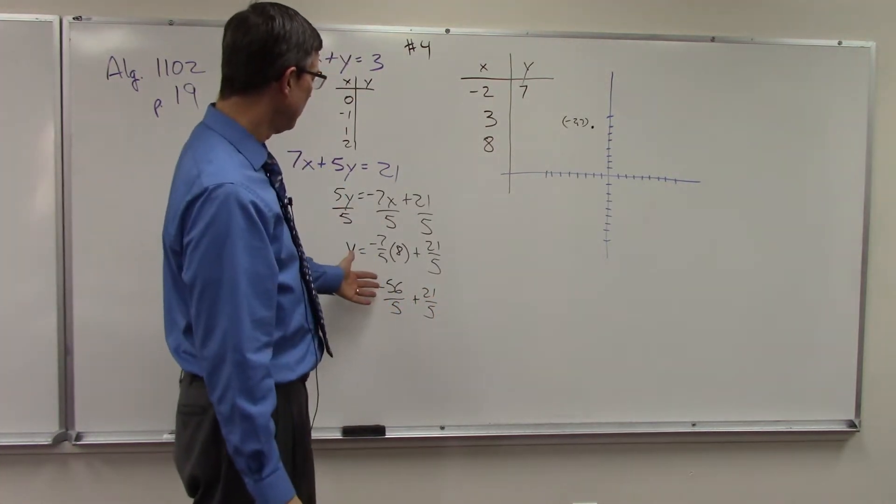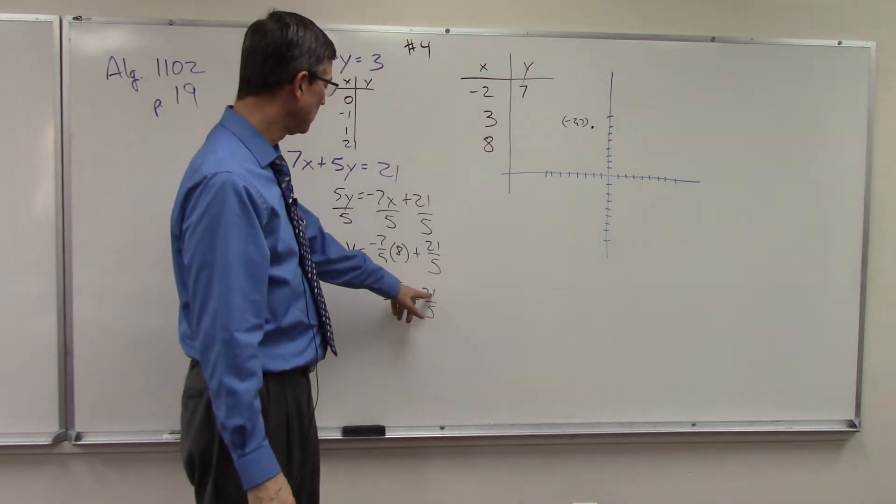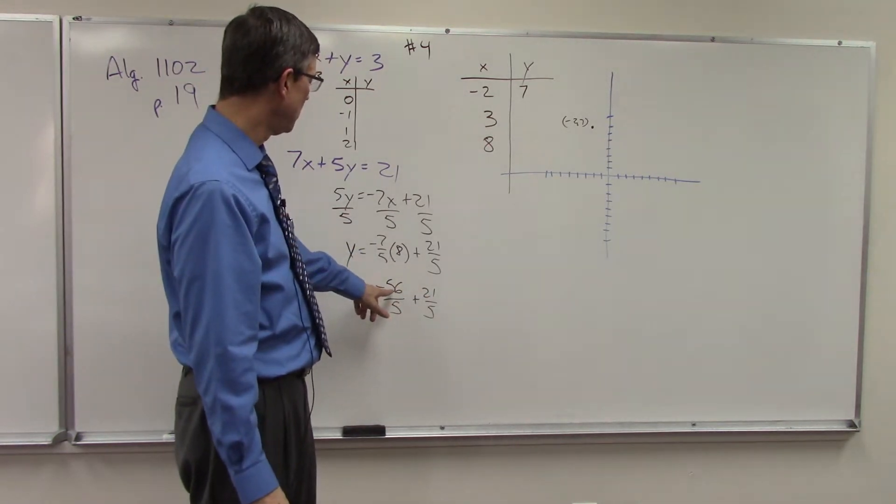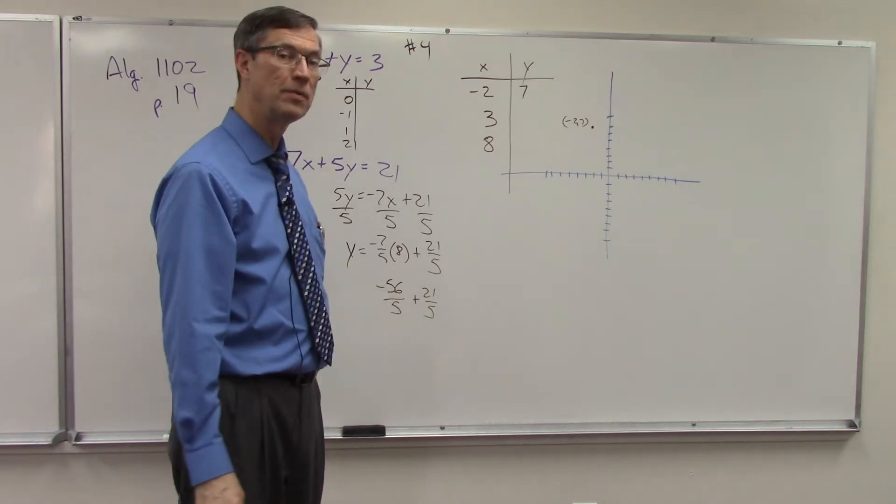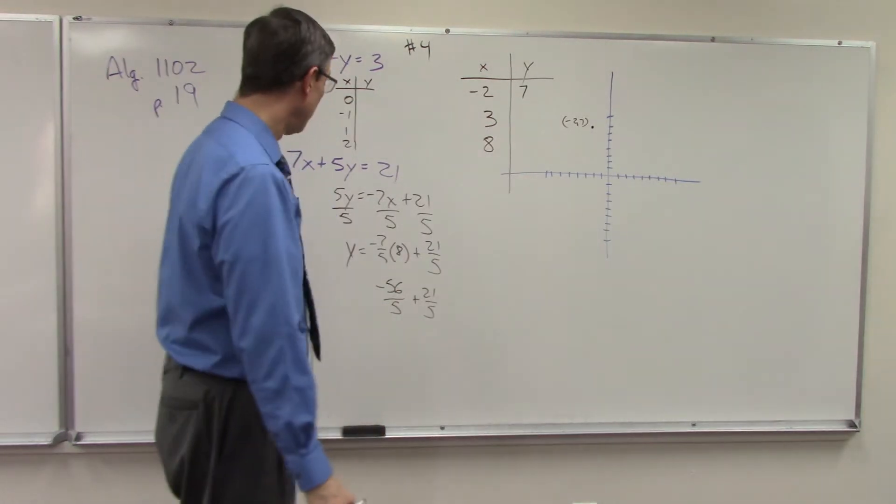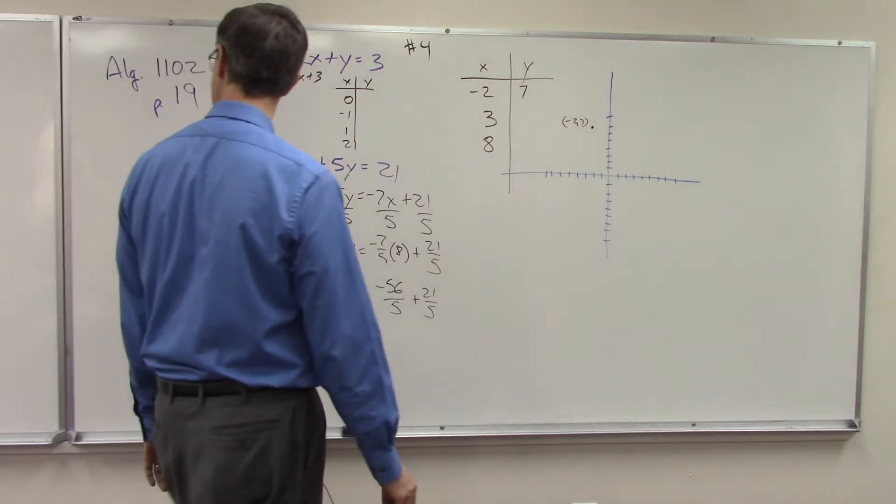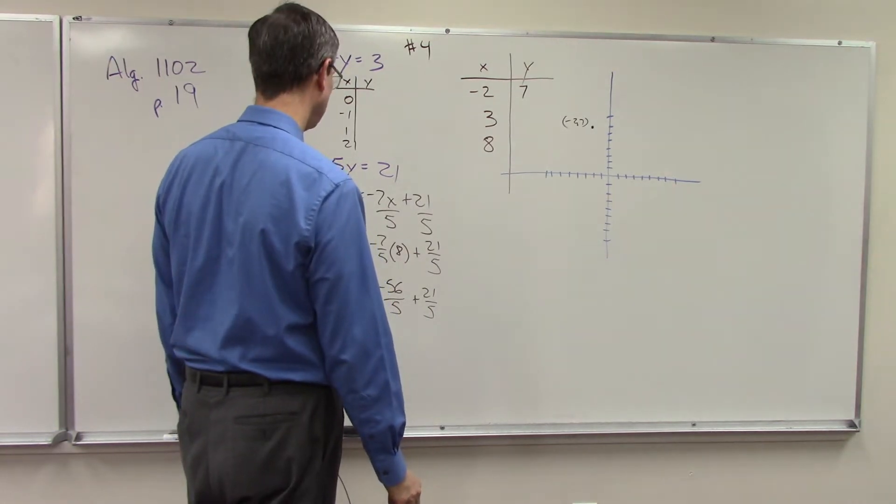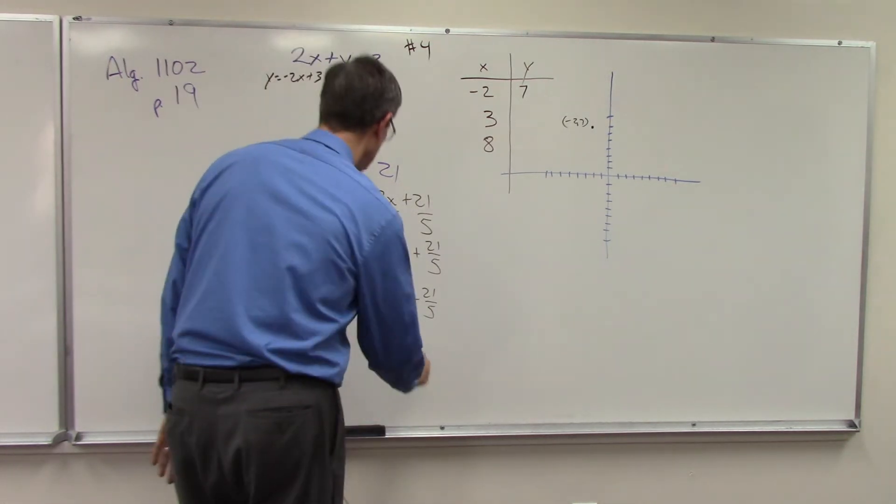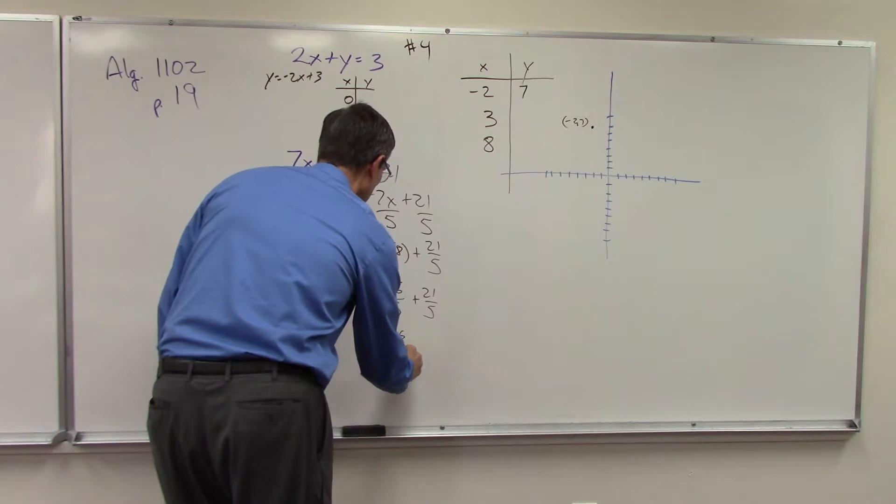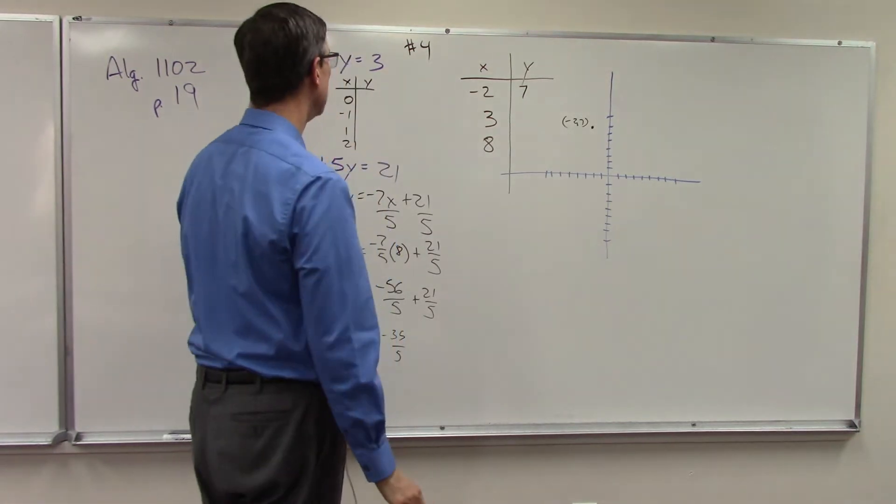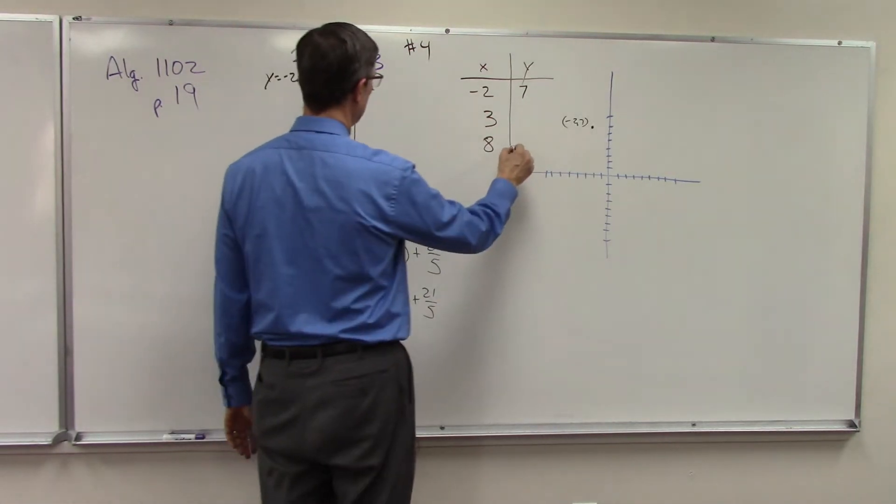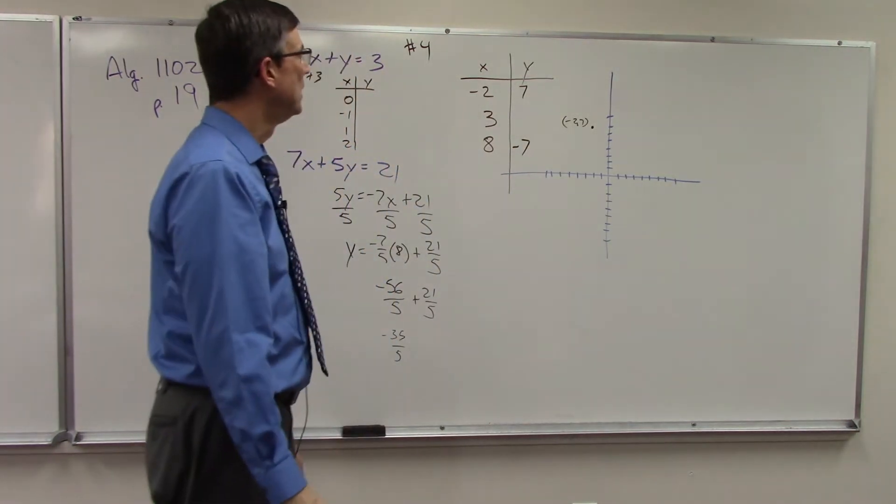So now what's negative 56 plus 21? So let's subtract the smaller from the larger, keep the sign of the larger. We have negative 35 over 5, which is going to give us negative 7.